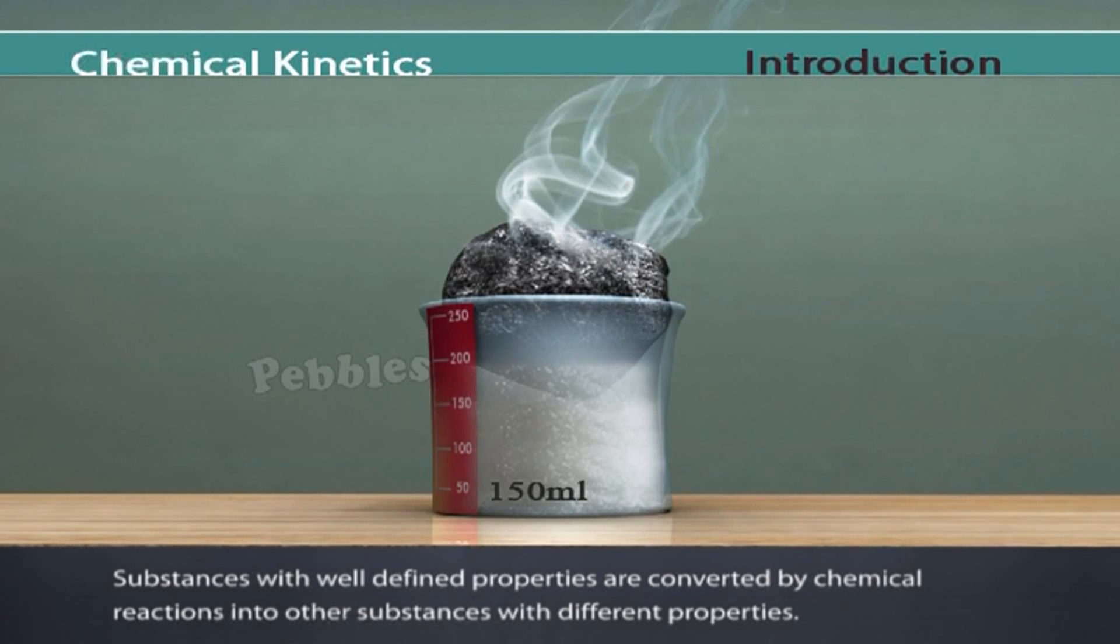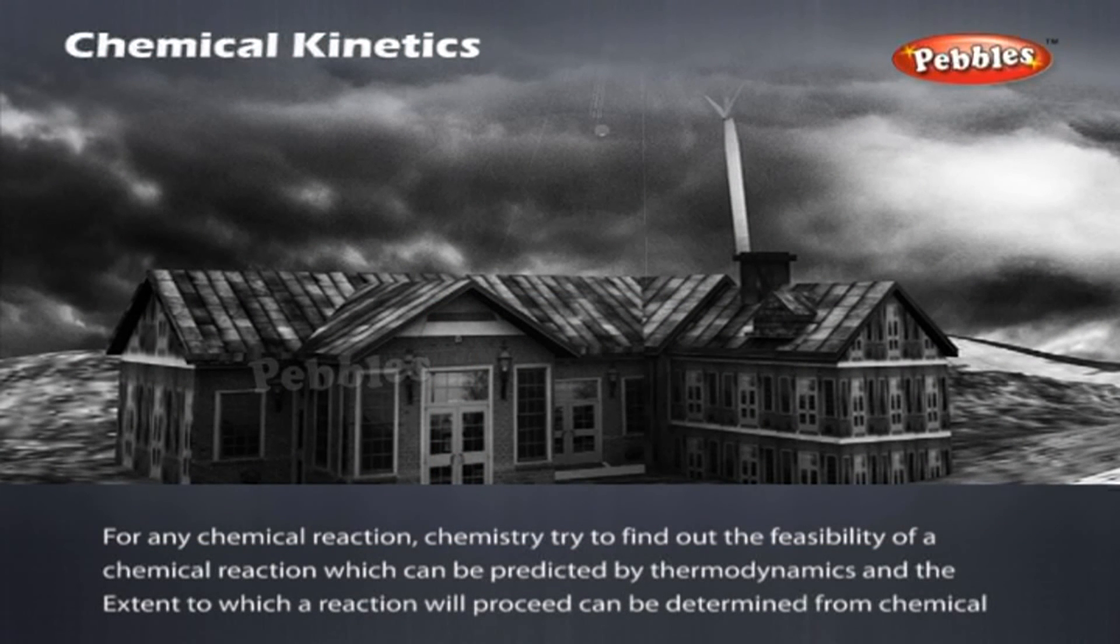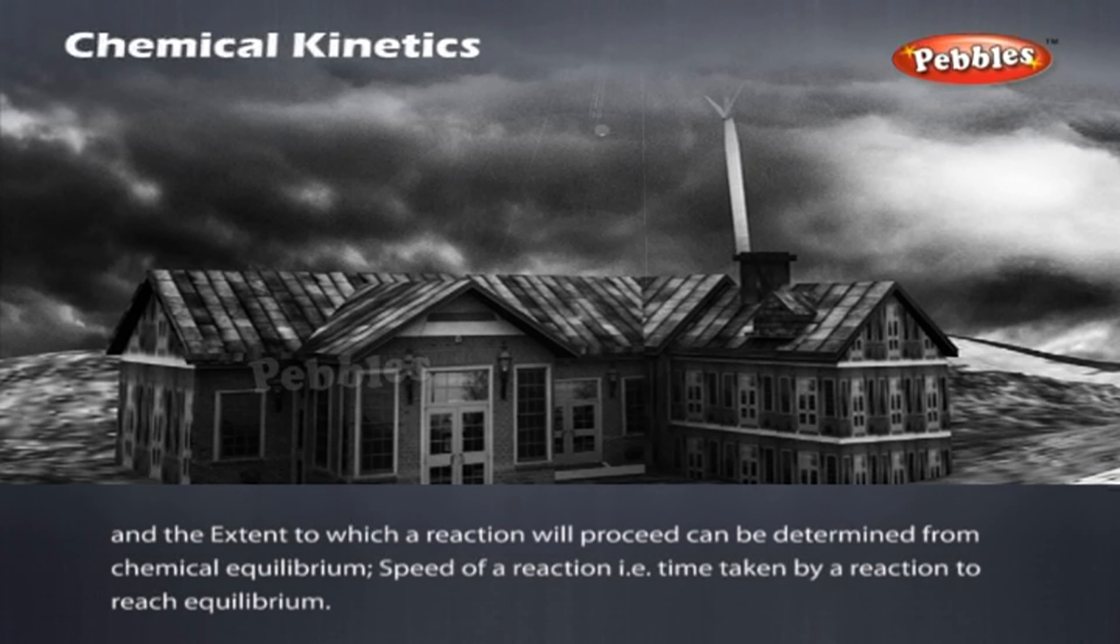Substances with well-defined properties are converted by chemical reactions into other substances with different properties. For any chemical reaction, chemistry tries to find out the feasibility of a chemical reaction, which can be predicted by thermodynamics, and the extent to which a reaction will proceed can be determined from chemical equilibrium, and the speed of a reaction, that is, time taken by a reaction to reach equilibrium.